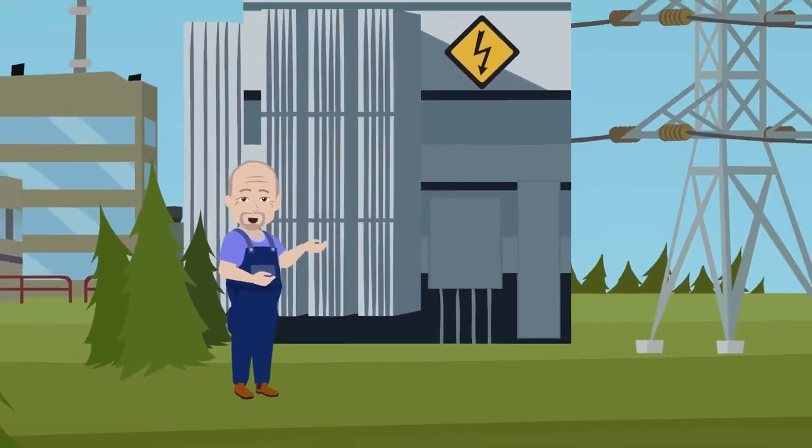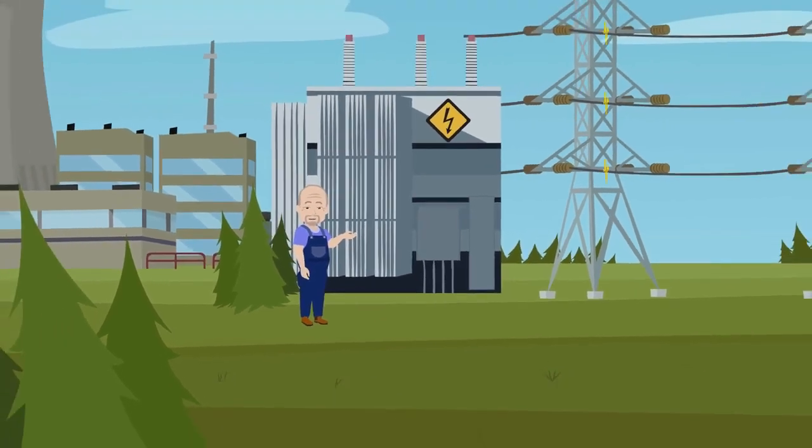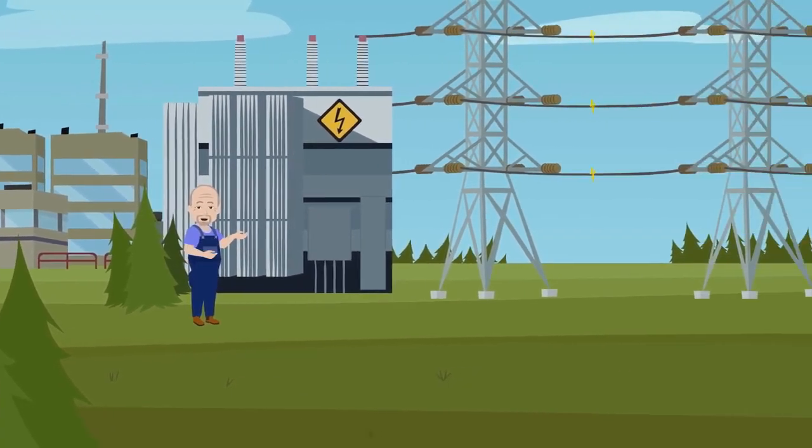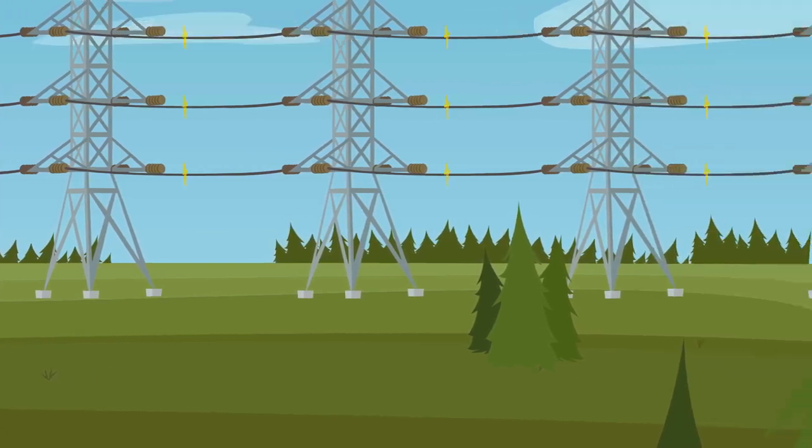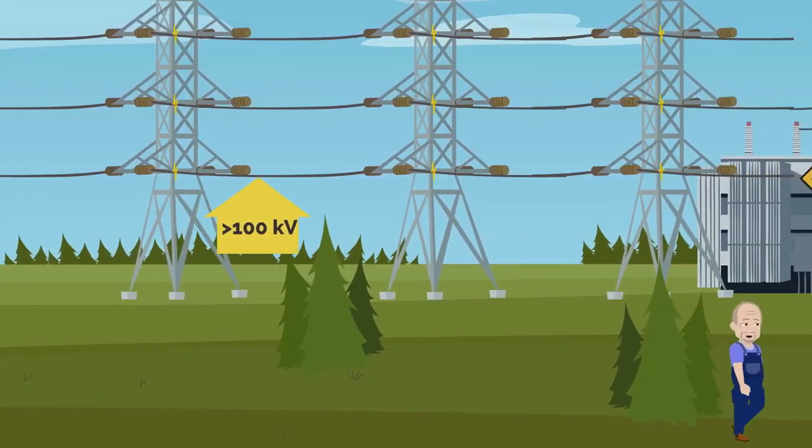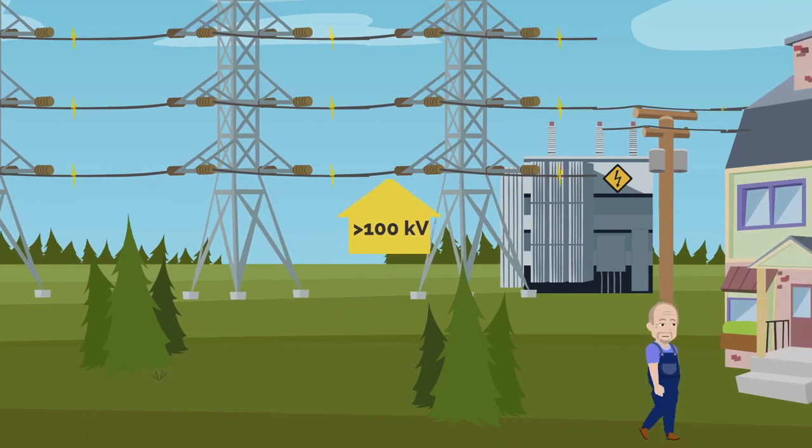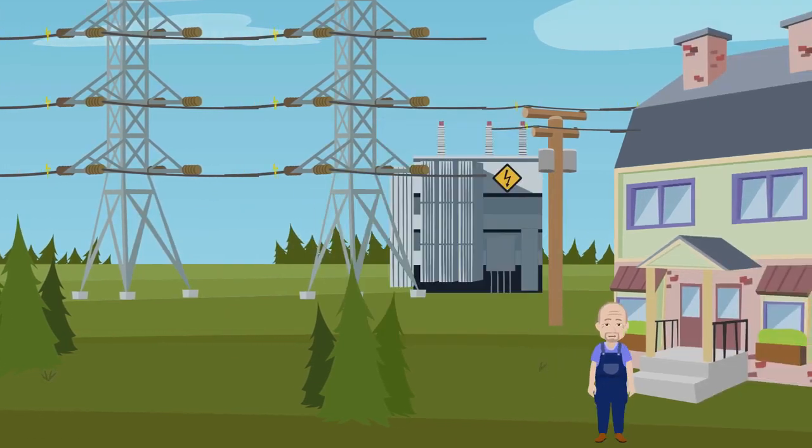Let's see how the electricity is supplied to our homes. The consumers are powered by power plants generating three-phase low-voltage alternate current. In order to reduce losses during long-distance transmission via power lines, the voltage is increased to several hundred kilovolts by means of step-up transformers.